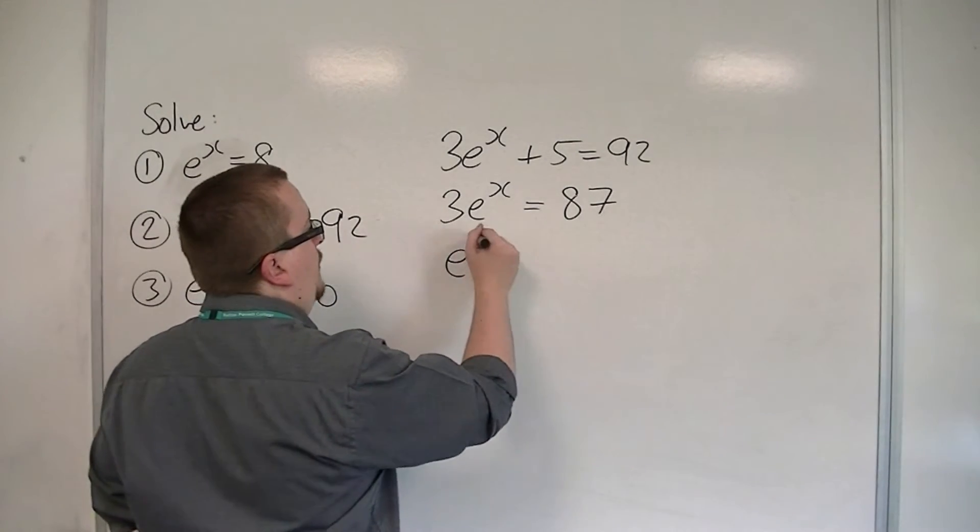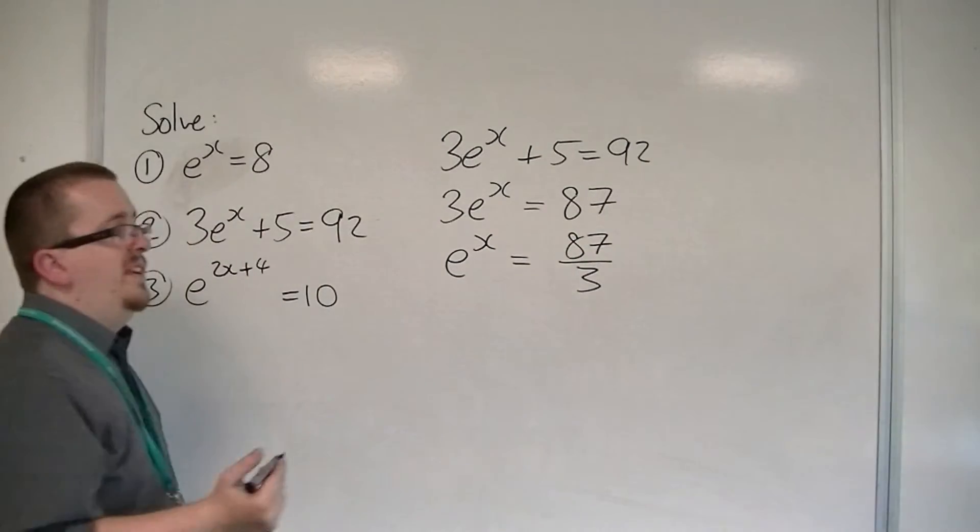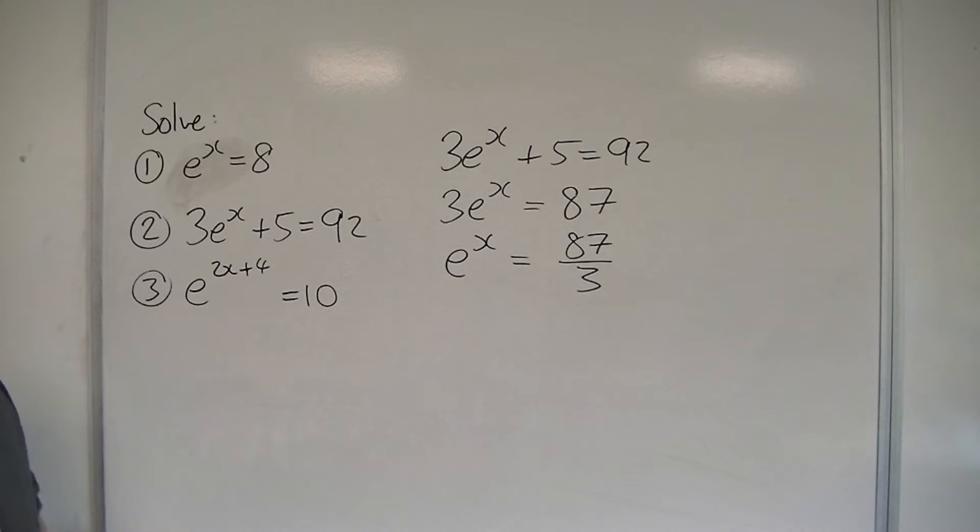Then I'm going to divide both sides by 3. So I'm just going to leave it as 87 over 3. And then we can do the same trick as before. We can log both sides.